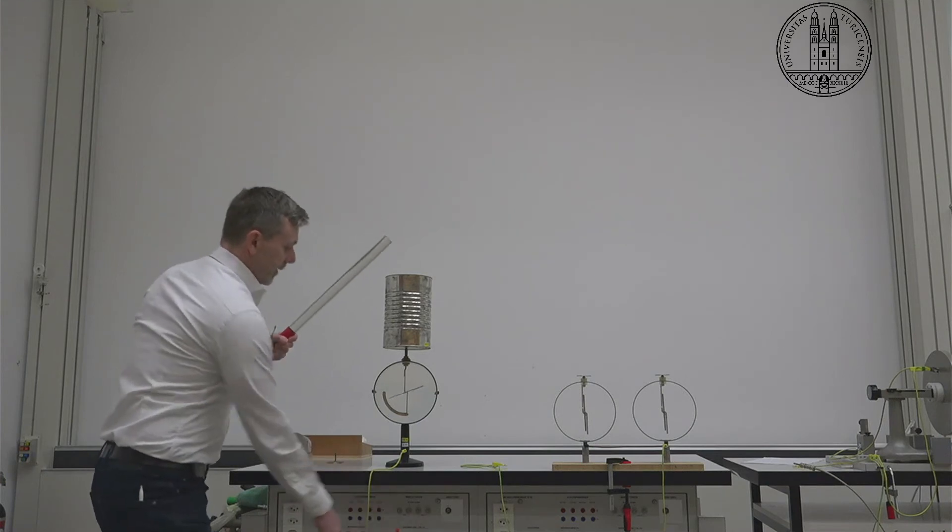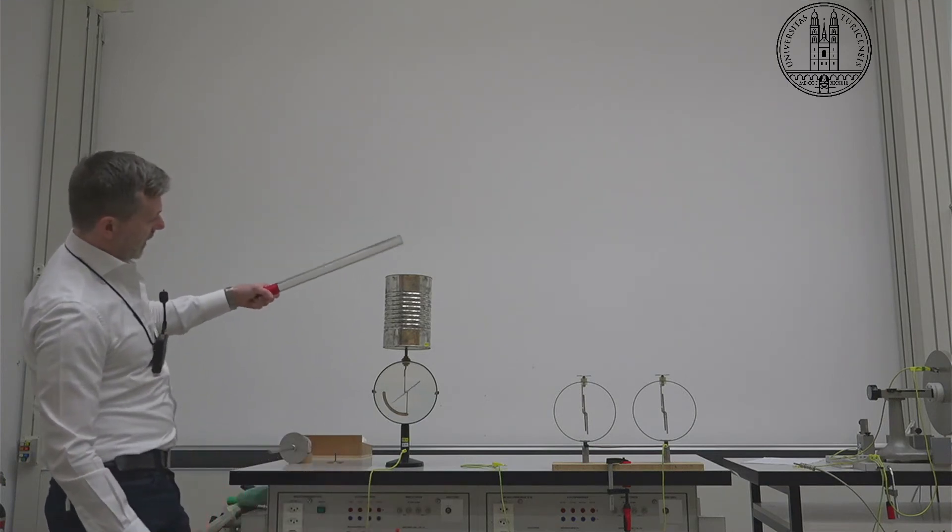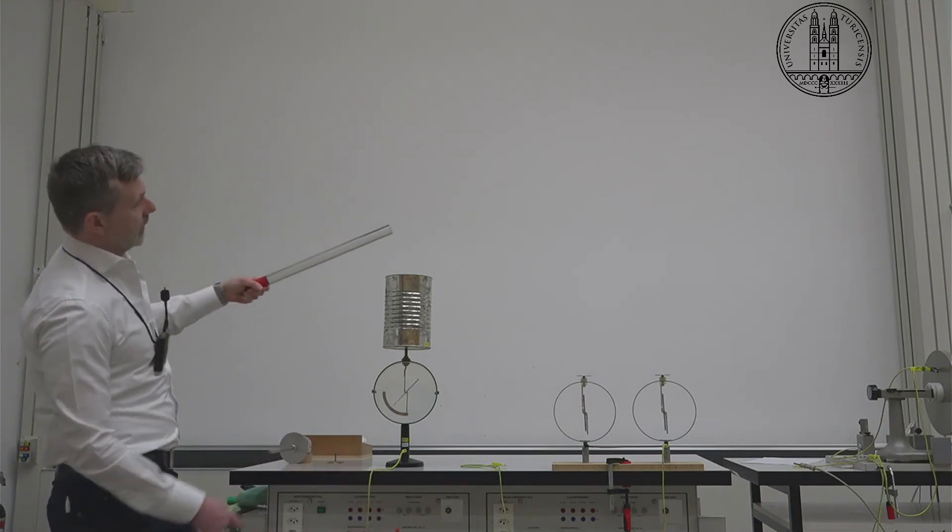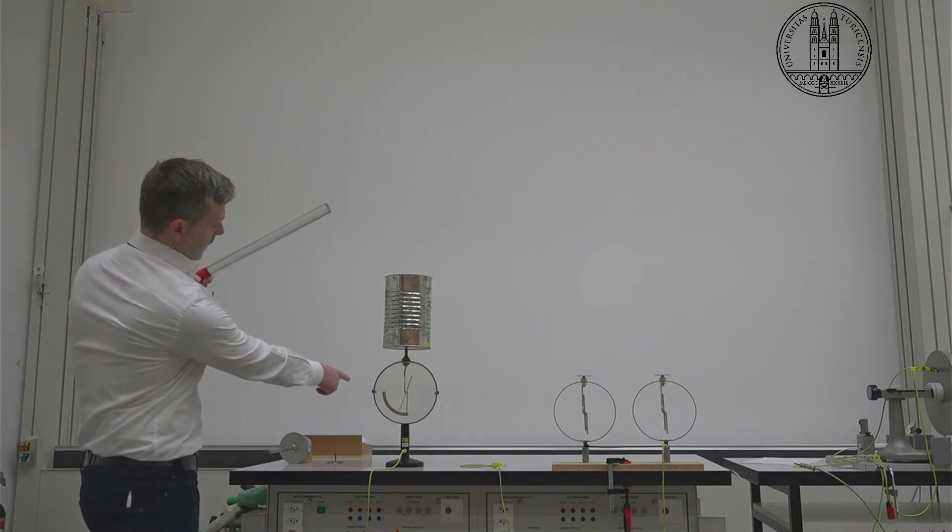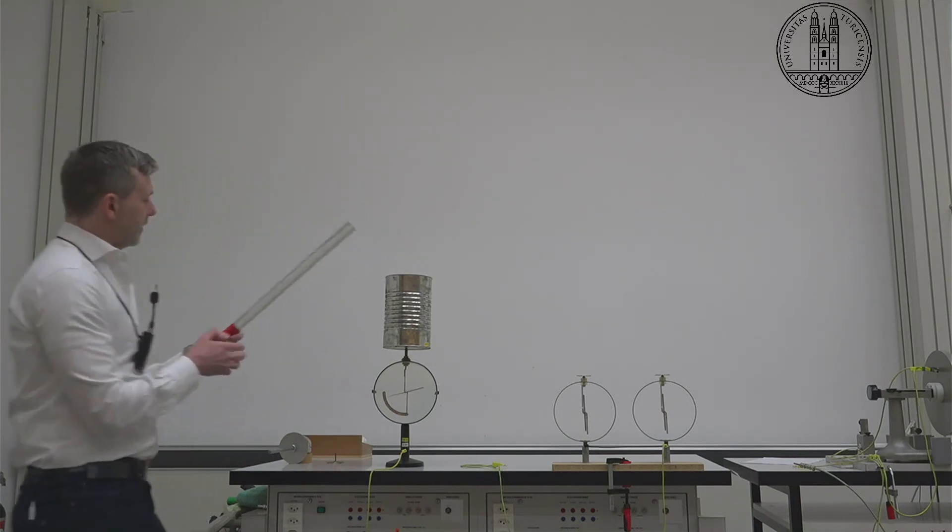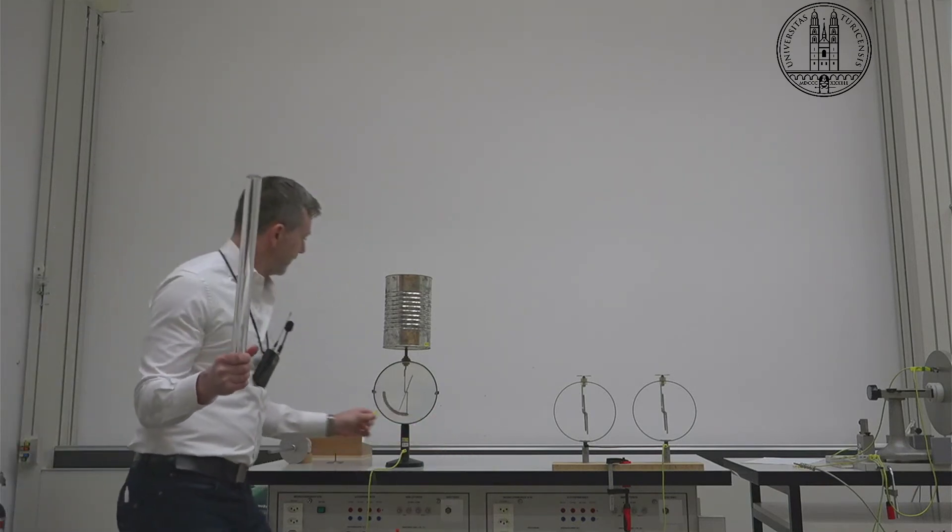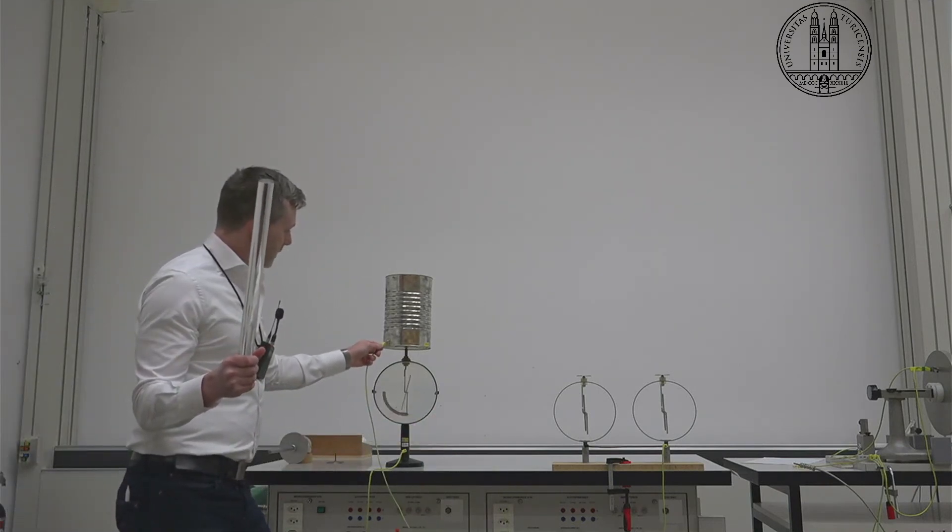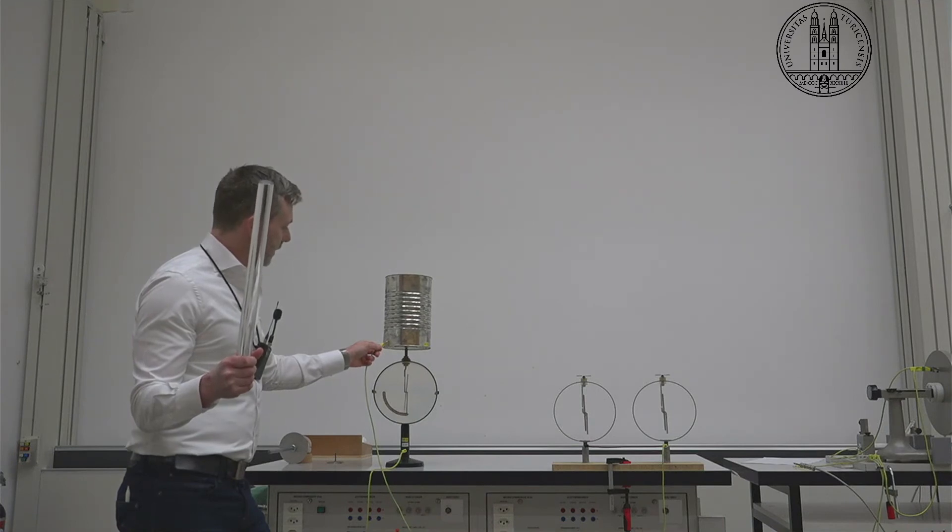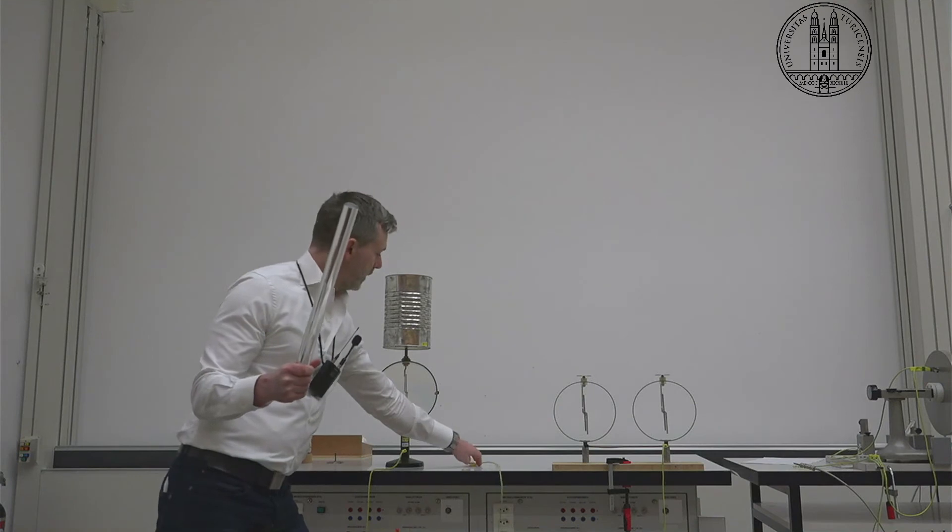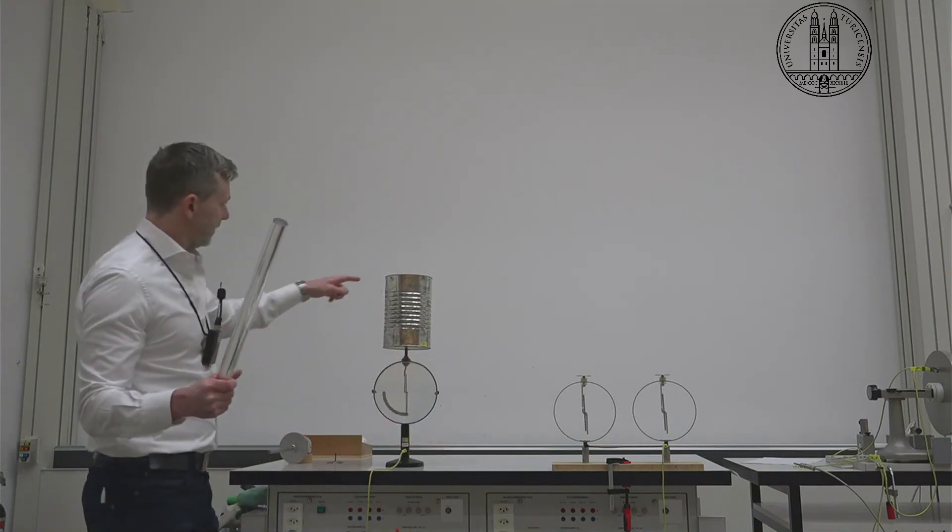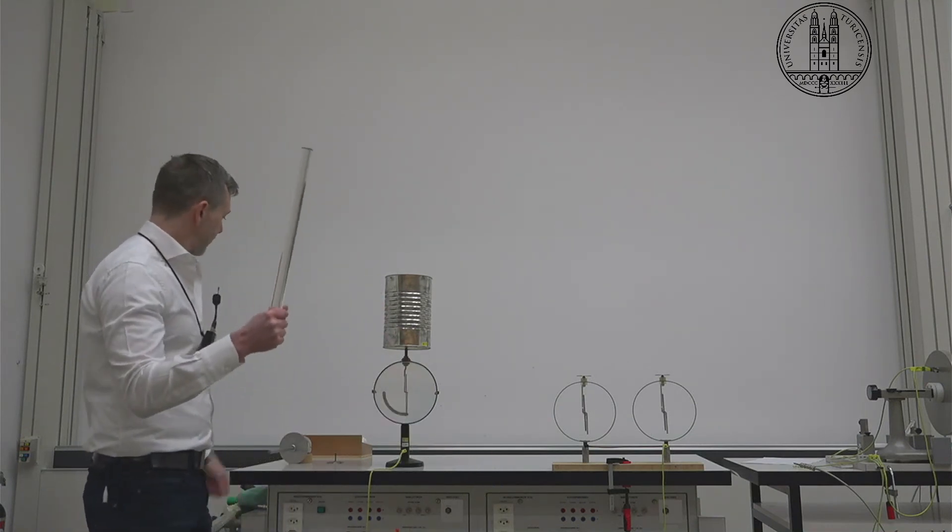So this is now a positively charged rod which we can see causes this can to move here and in fact it looks like I have sparked it and I need to ground it again. So we now have this can is at zero charge, this rod is at positive charge.